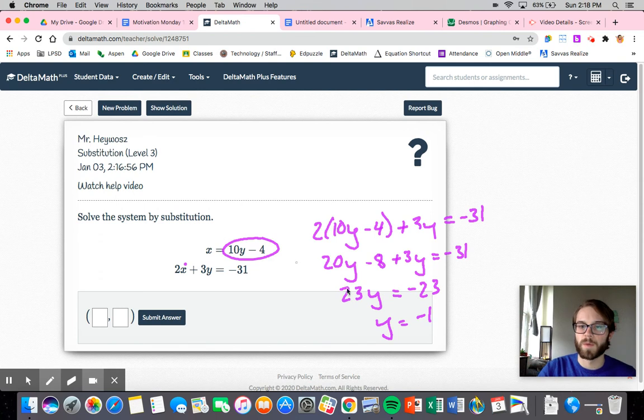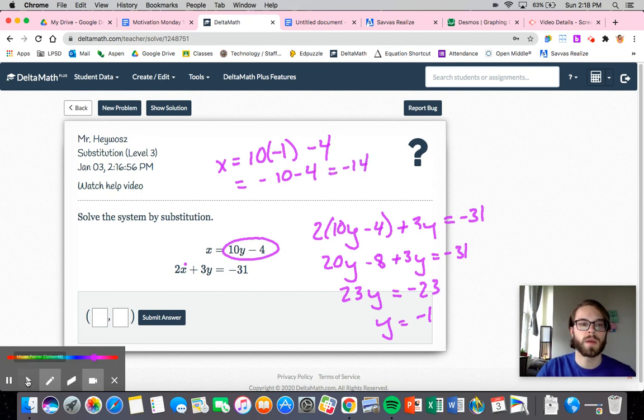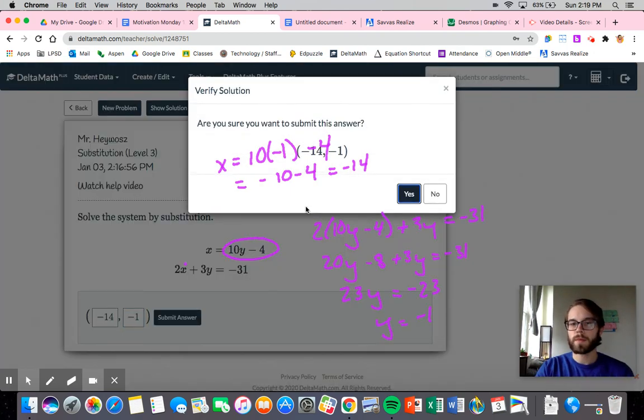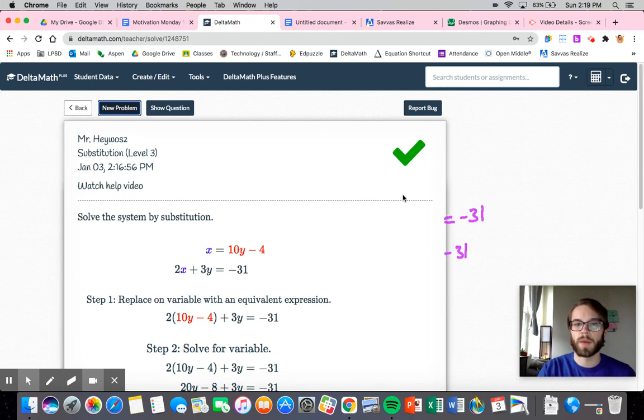All right. Now I'm going to plug it back in. It doesn't matter which one I plug it into. I'm going to plug it into this one, so I don't necessarily move anything around. I get x is equal to 10 times negative 1 minus 4, negative 1 minus 4, which is negative 14. So then I should have the point negative 14, negative 1. We're good.